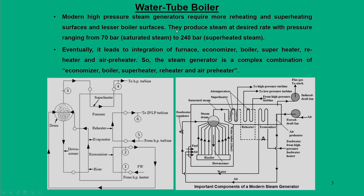Let us give a brief introduction about water tube boilers, which are nothing but modern high pressure steam generators. Normally they operate at very high pressures — 70 bar for saturated steam and 240 bar for superheated steam. Water tube boilers are nothing but the integration of furnace, economizer, boiler, superheater, reheater, and air preheaters — in other words a complex combination of all these components.